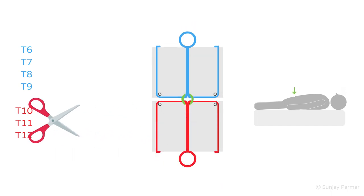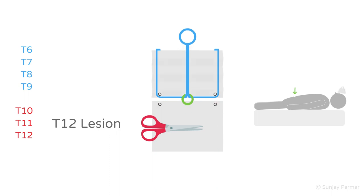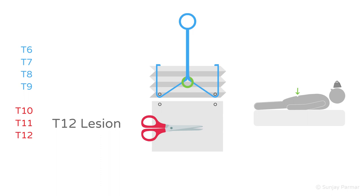If the lesion occurs at T12, the same positive Beevor's sign will also be seen, as although T10 and T11 can still supply the lower rectus abdominis, it will still be weaker compared to the upper rectus abdominis with no root problems.